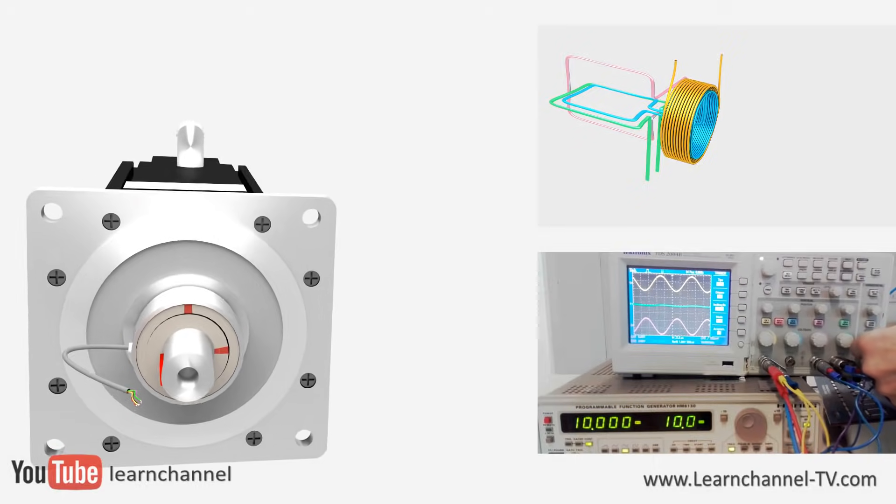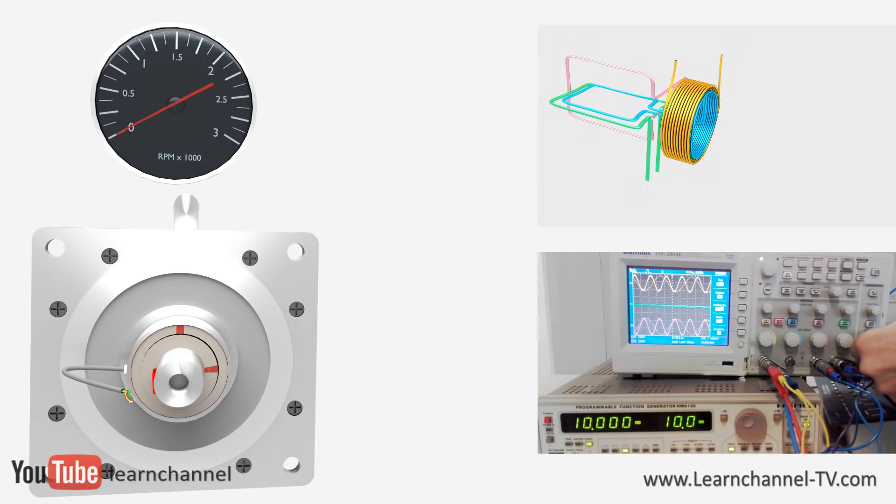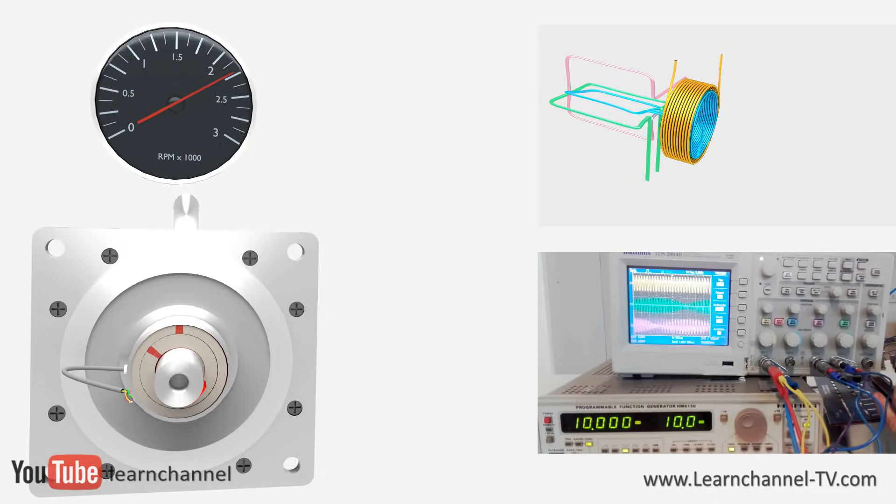So, let's change the time base of our oscilloscope and watch the measuring signals. What you see now is that you get a modulated sine and a cosine measuring signal, which are also called envelope curves.